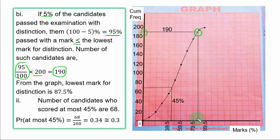From the curve, 190 is somewhere here. You trace from the vertical axis to the curve and trace down. Between 79.5 and 89.5, the difference is 10 with five lines, meaning one line is 2. So you have 79.5, 81.5, 83.5, 85.5, and the line falls on the fourth line, which is 87.5 as the lowest mark for distinction.